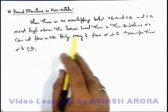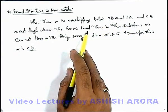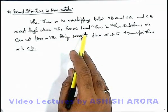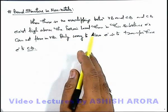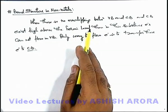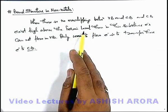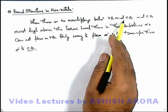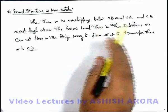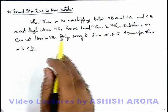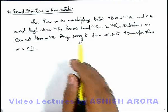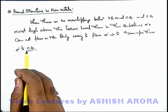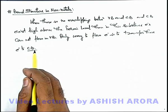The conduction band exists high above the Fermi level. The Fermi level is the level up to which electrons can exist at zero Kelvin temperature in a substance. If the Fermi energy level is not in the conduction band, no free electrons will exist, and electrons in the valence band cannot flow. The only way to flow electrons is to transfer them to the conduction band, which requires some excess energy.